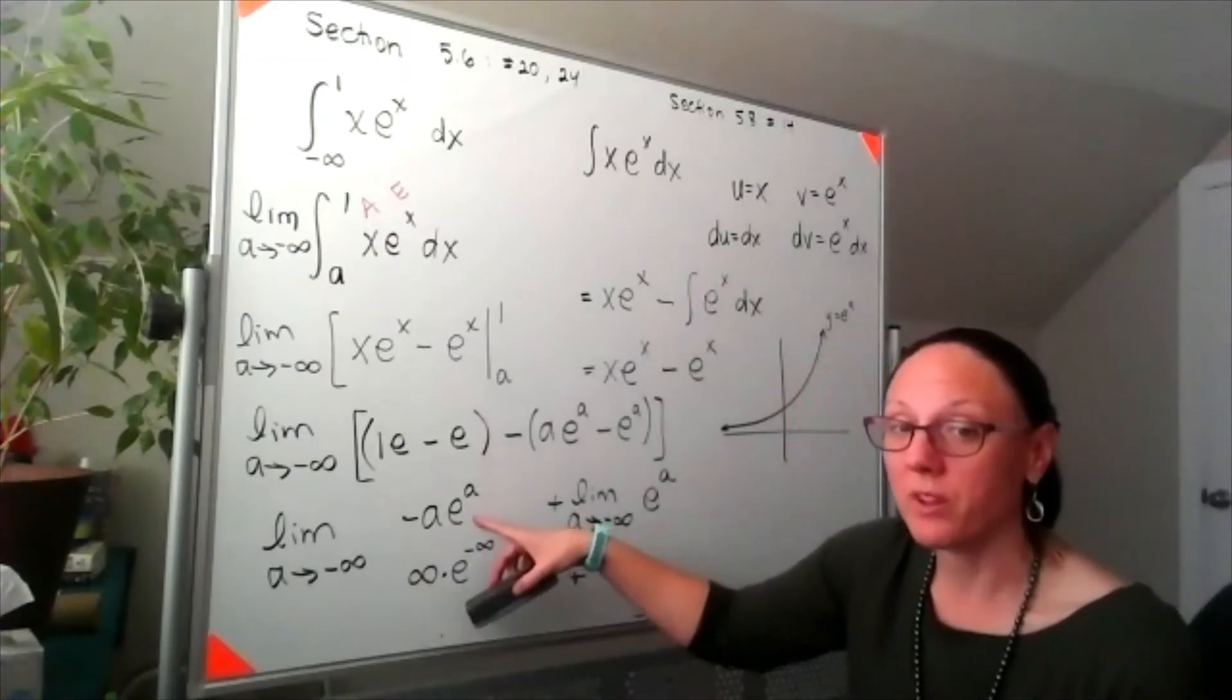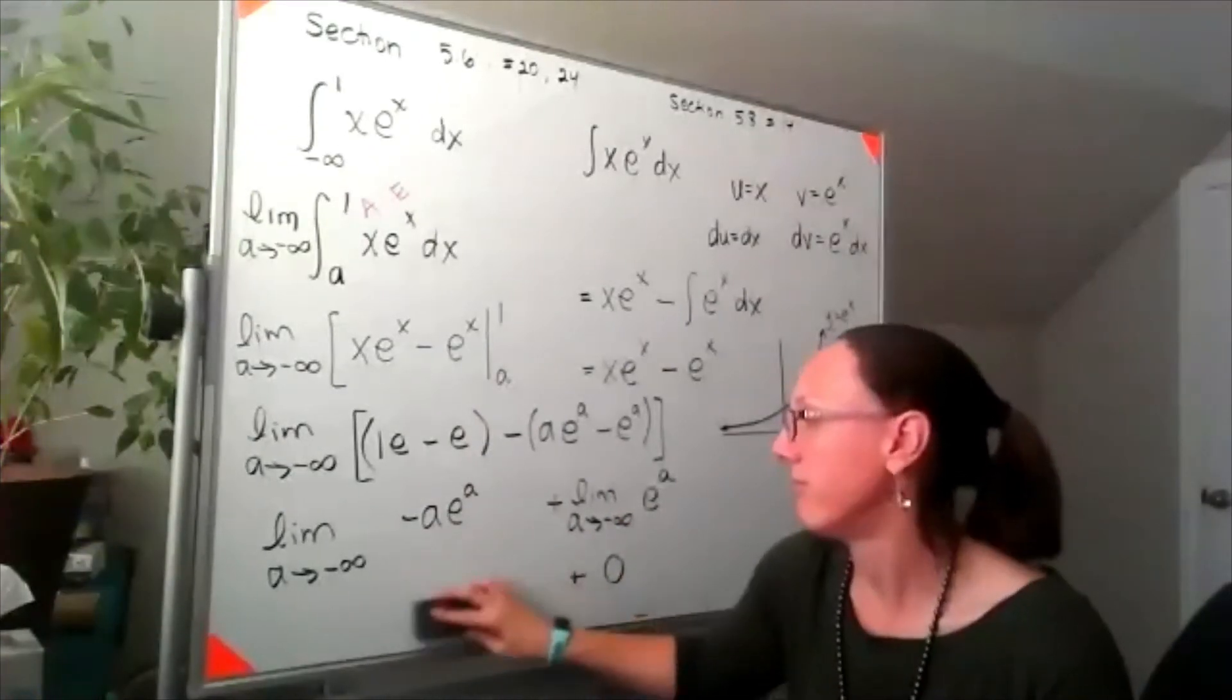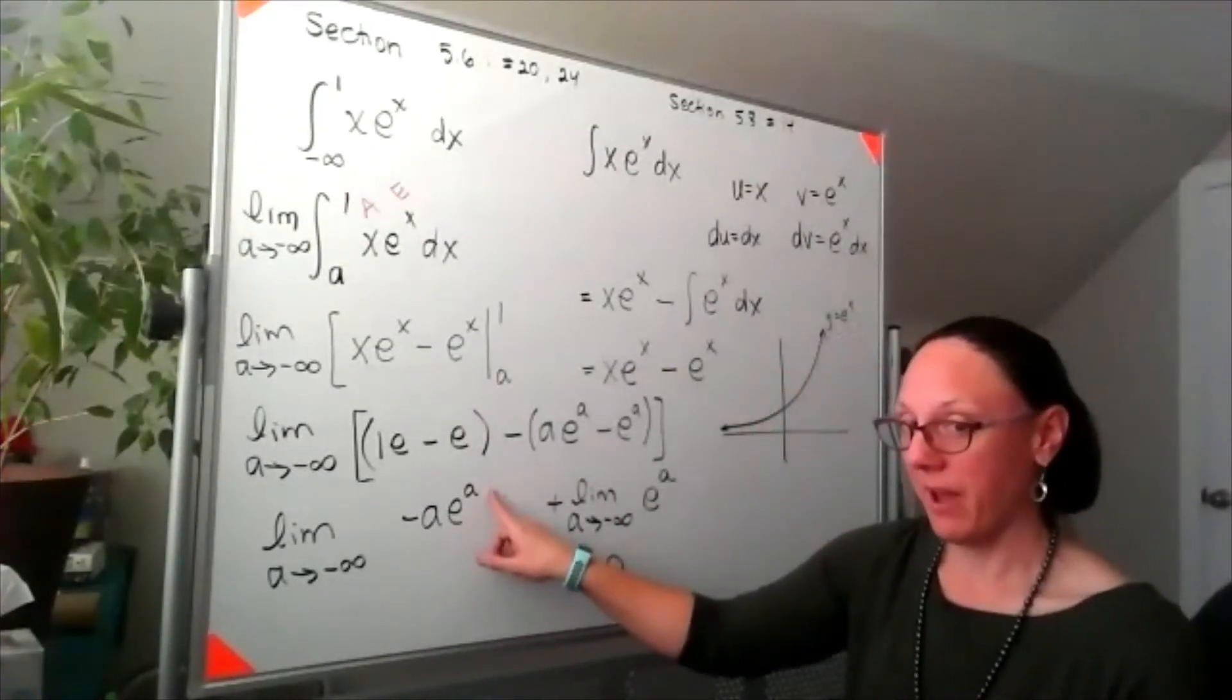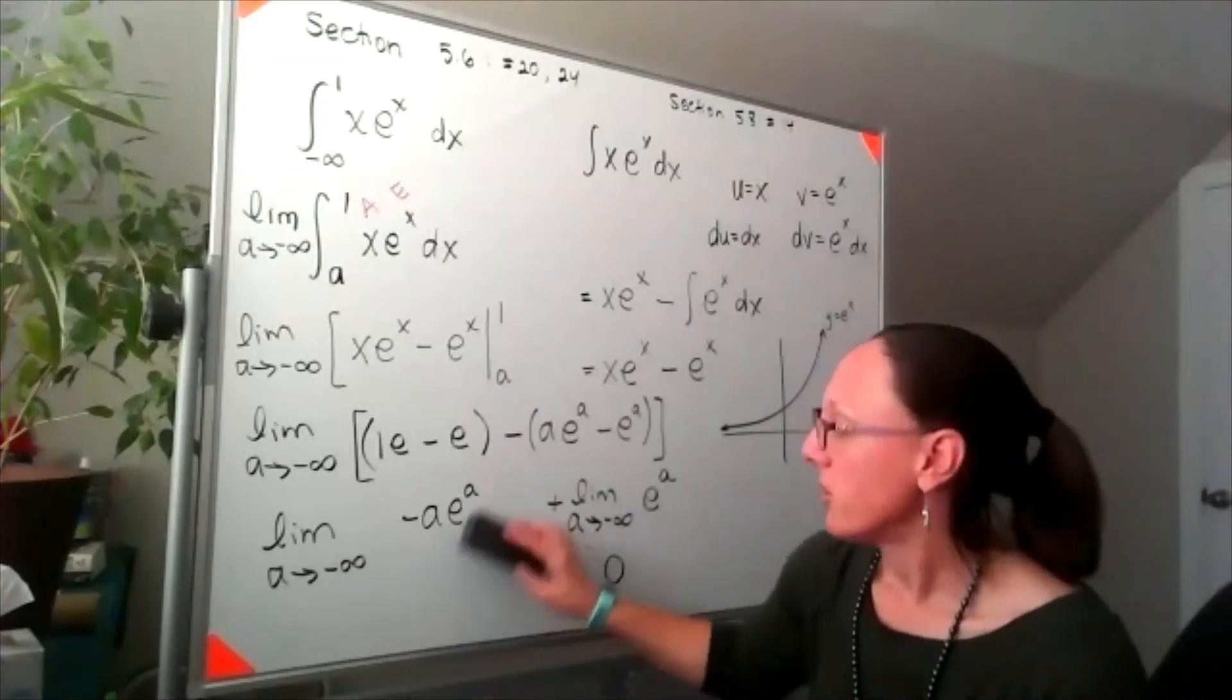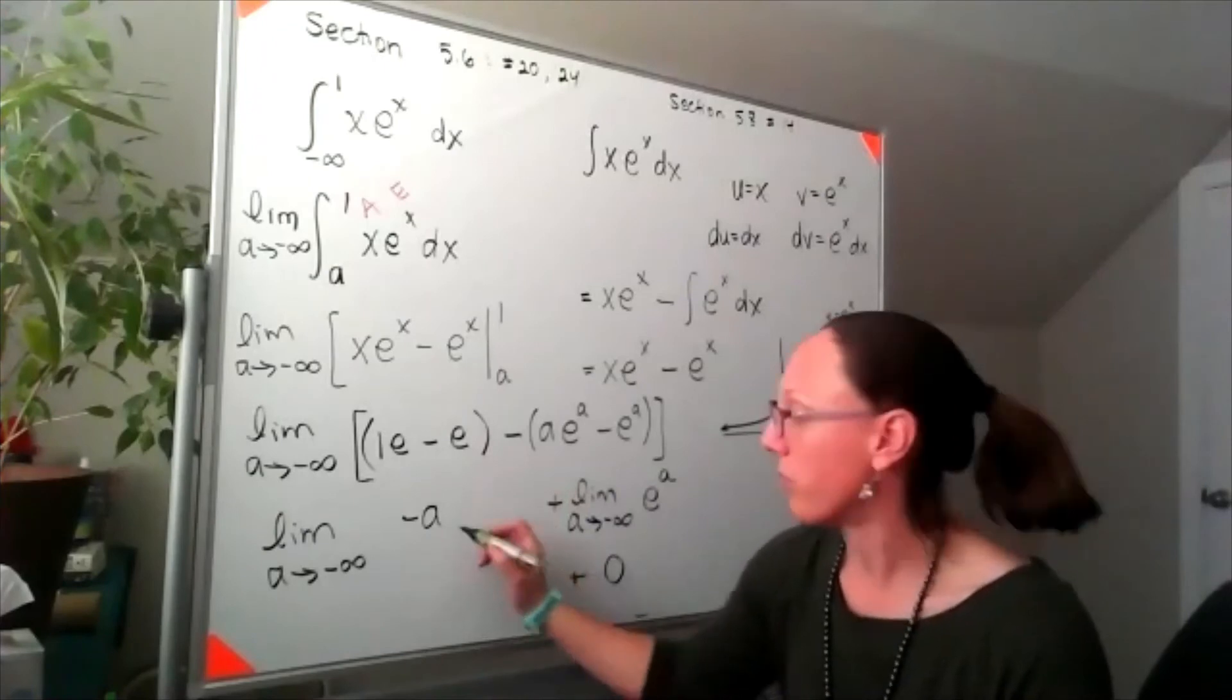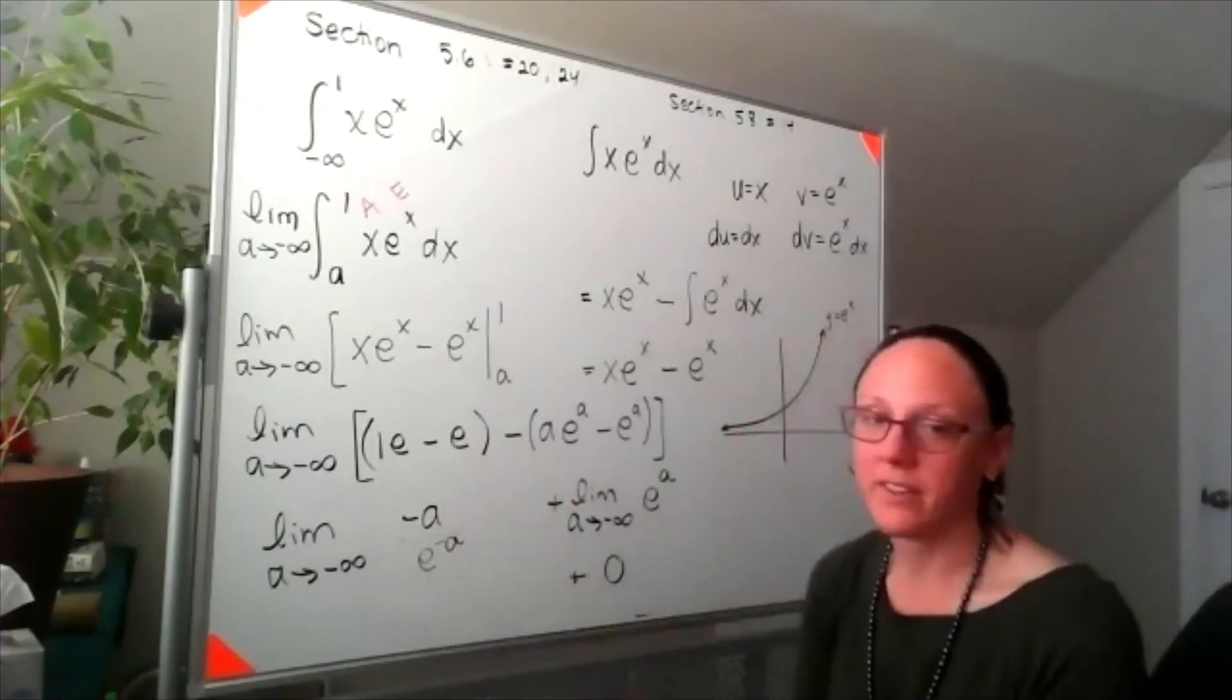What I want to do to manipulate this is rewrite the original function of negative a e to the a and rewrite that as negative a over e to the negative a.